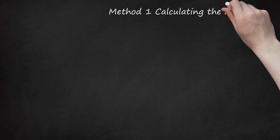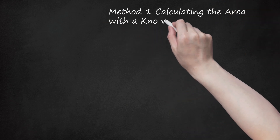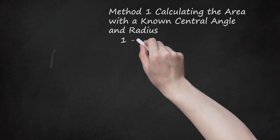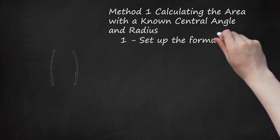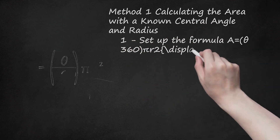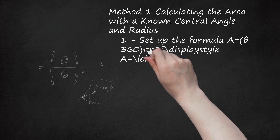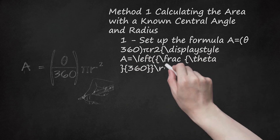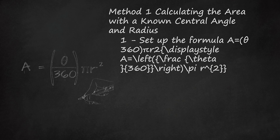Method 1: Calculating the Area with a Known Central Angle and Radius. Step 1: Set up the formula A = (θ/360)πr². In the formula, r equals the length of the radius, and θ equals the degrees in the central angle of the sector.